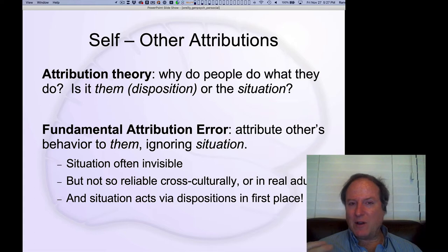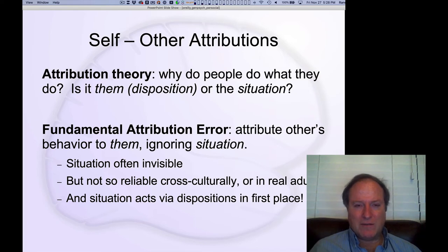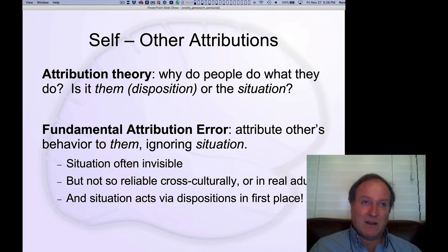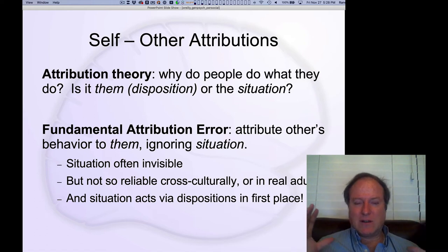The fundamental attribution error is a very widely discussed phenomenon that is also somewhat hard to replicate, especially cross-culturally, but is nevertheless very compelling. It's the idea that we tend to attribute other people's behavior to dispositional factors. When we look at somebody else behaving, we think, 'oh, they're doing that because that's who they are,' and we tend to ignore the situational factors influencing their behavior. It's easier to focus attention on that individual than to see situational factors.